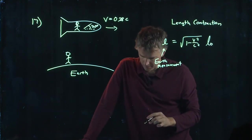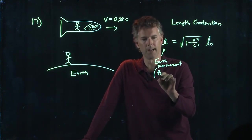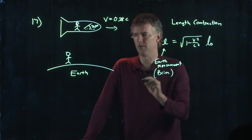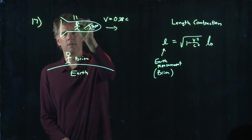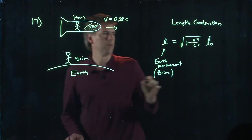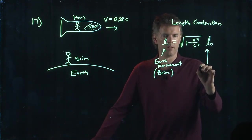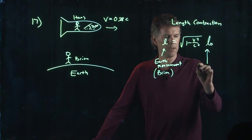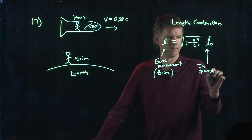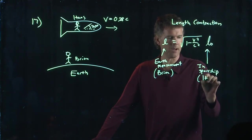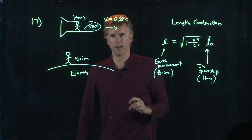In this case, that would be Brian. Brian's the one that stayed on Earth. L-naught is the measurement in the spaceship. So that's measured by Hans.